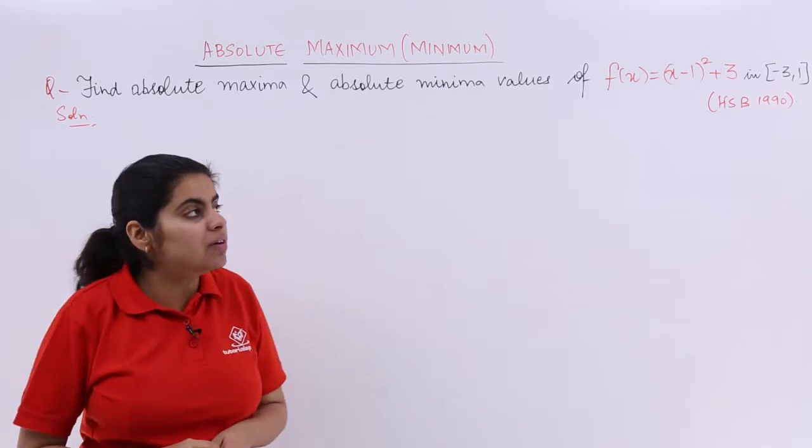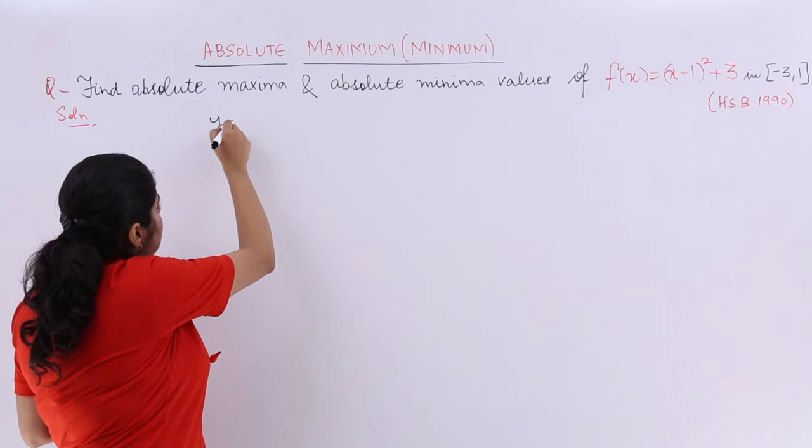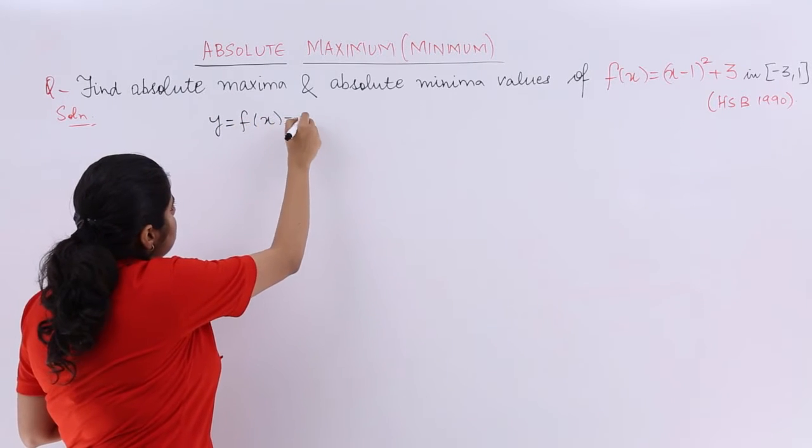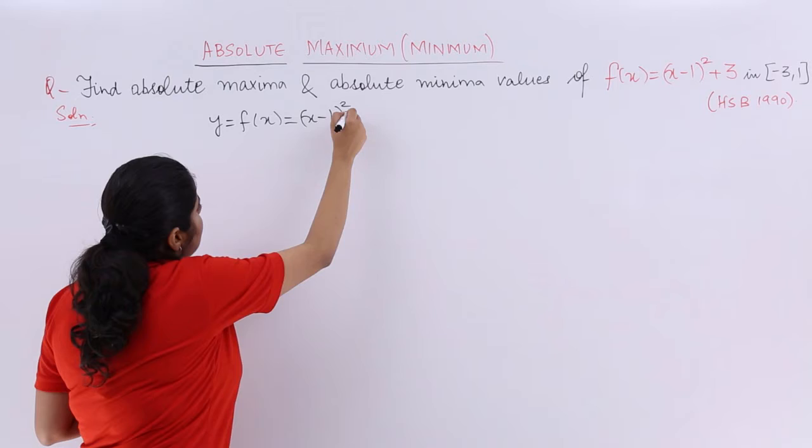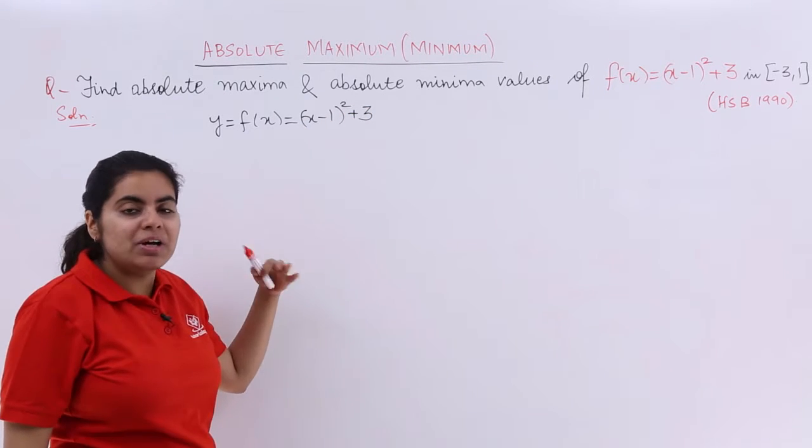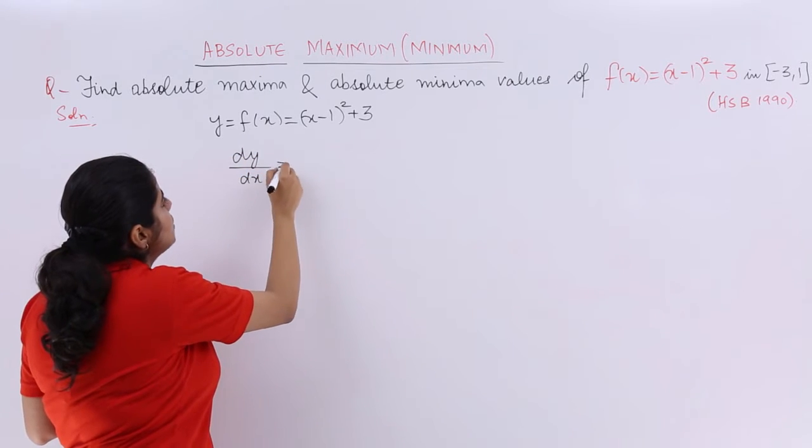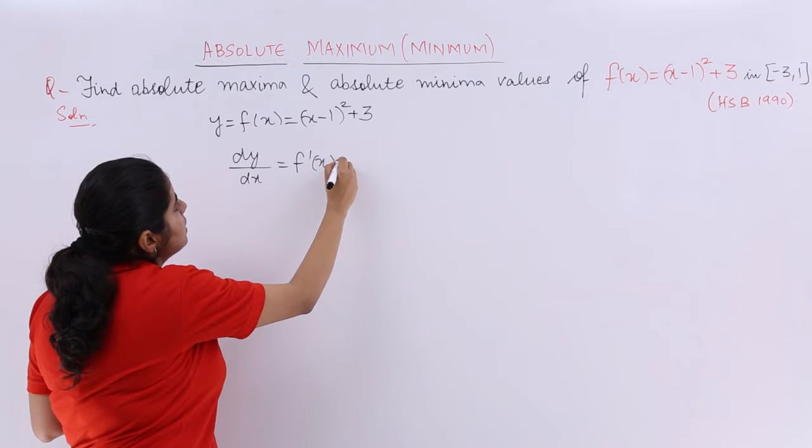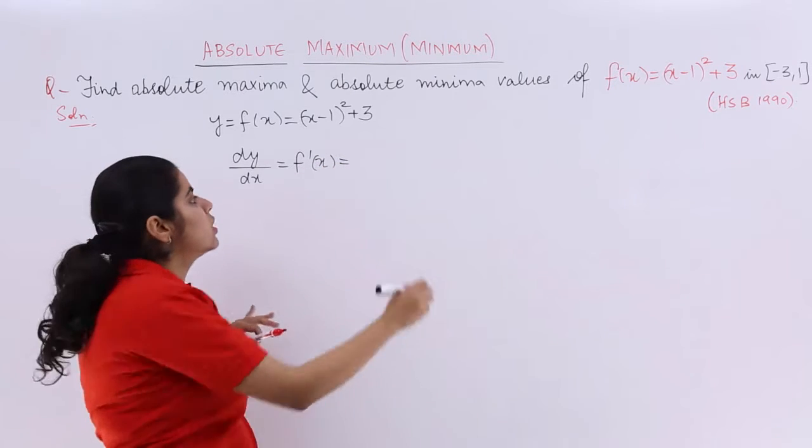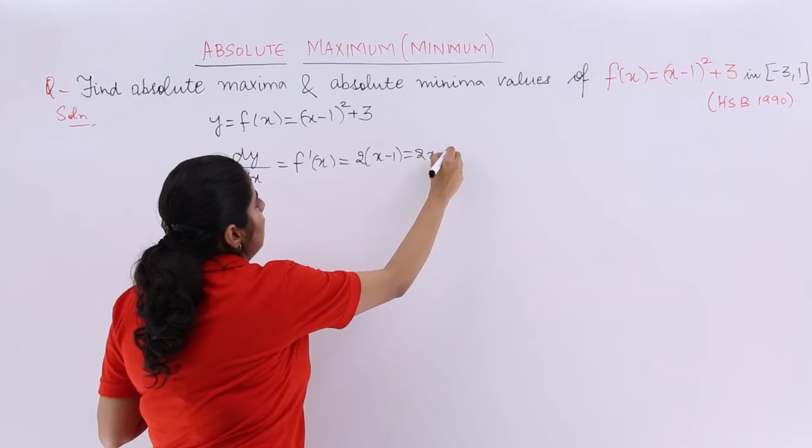What has been given is a function. Let us write y = f(x) = (x-1)² + 3, which is the function. Now, what do you have as dy/dx? My dy/dx, which is equal to f'(x), is the first order derivative. So it is twice of (x-1), which is nothing but 2x - 2.